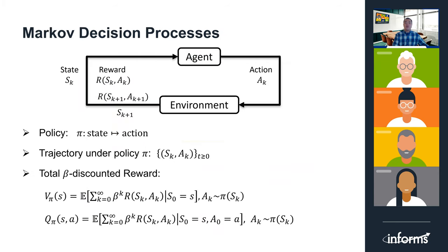The underlying model for a reinforcement learning problem is a Markov decision process. In a Markov decision process, at time k, the agent is at a certain state of the environment, denoted by s_k, and can take some action a_k. Then the dynamics of the environment will drive the agent to a new state s_{k+1}, and return the agent some reward r_k. The rule of choosing actions based on the current state is called a policy — a mapping from the state space to the action space, which can be either deterministic or stochastic.